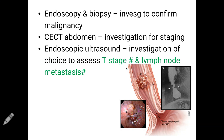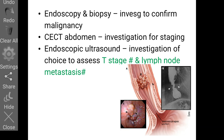The investigation to confirm malignancy is endoscopic-guided biopsy. For staging, contrast-enhanced CT (CECT) is used. However, the investigation of choice to assess the T stage of the cancer and to detect lymph node metastasis is endoscopic ultrasound, not CECT.